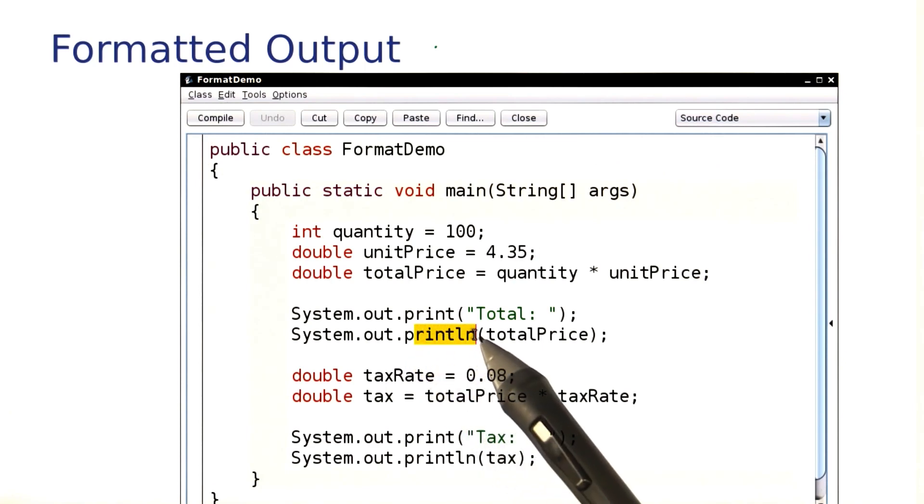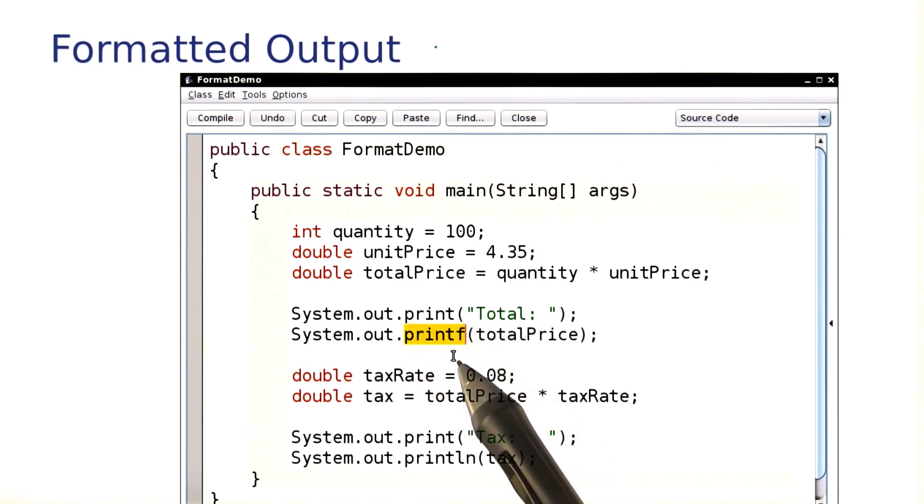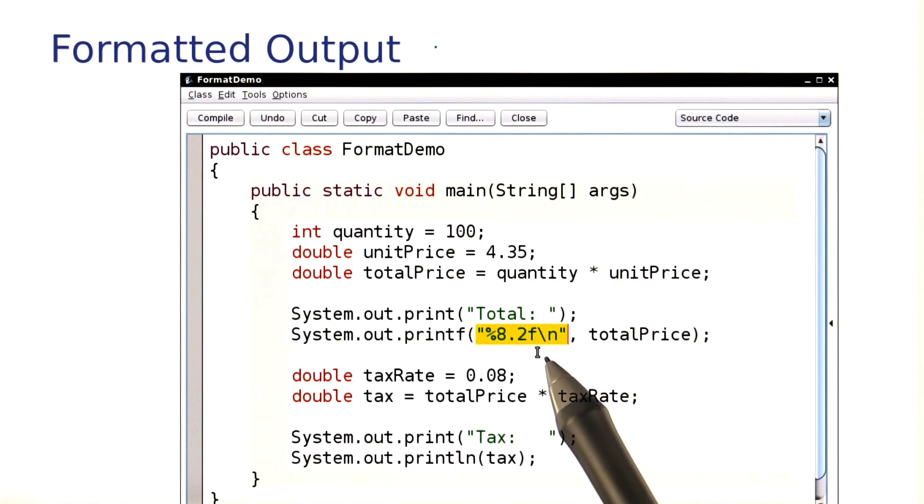Here, instead of just calling println, we'll call a different method. It's called printf for print formatted, and here we need to add a formatting string. The formatting string is here. It looks a little arcane.